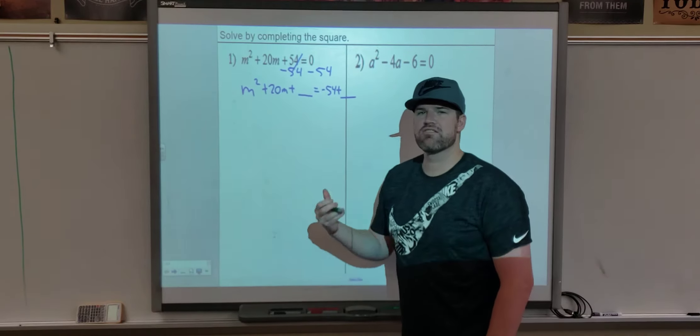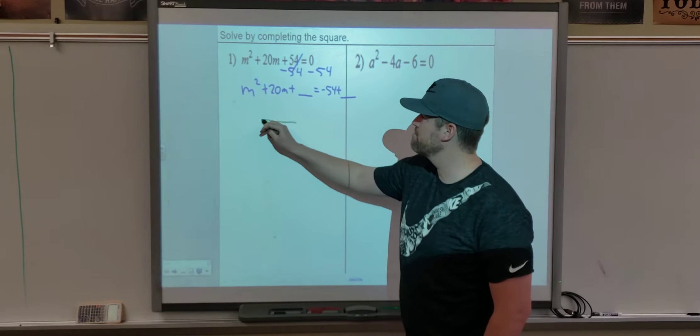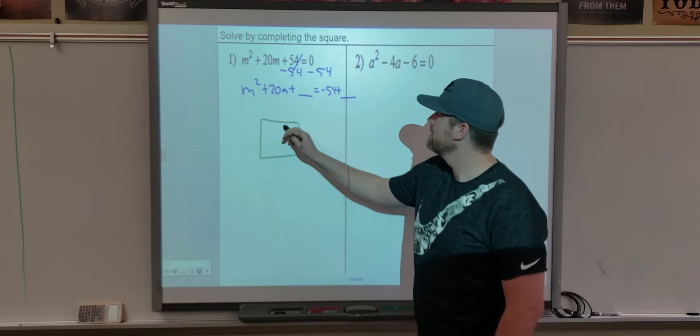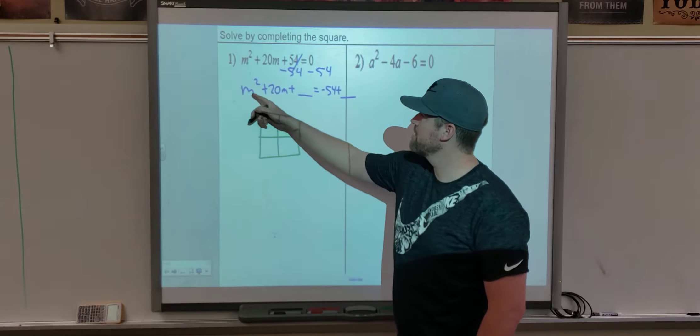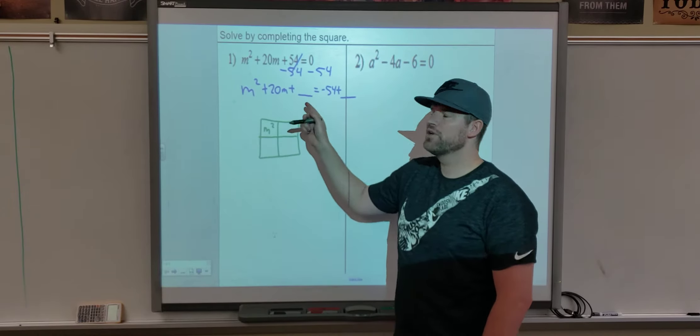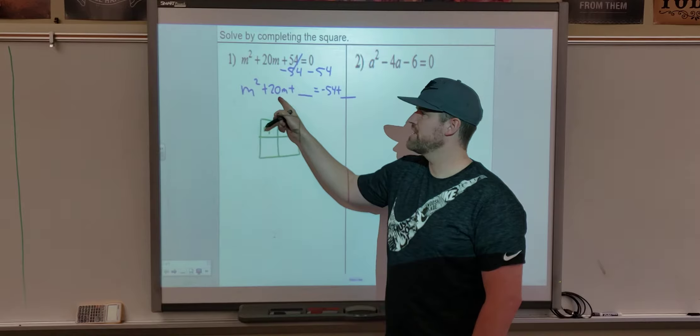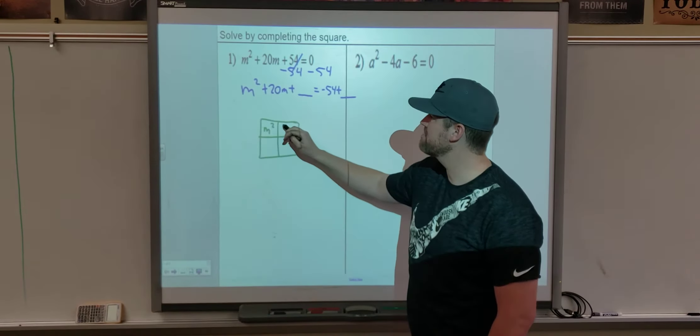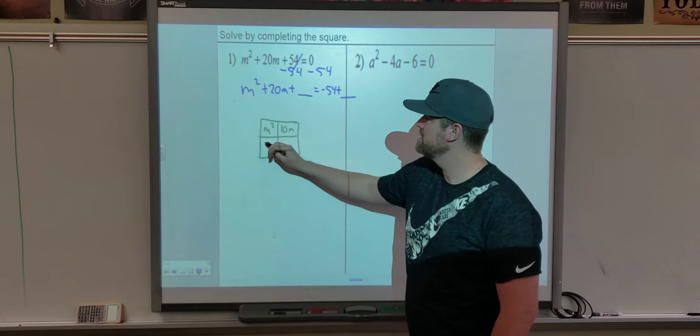At this point, we're going to make our square. It's still a box, but this one we can call a square because it's going to be a perfect square. We're going to put our first term in our first box. We don't know our last term, but we do know to make the perfect square, we're going to take our middle term and split it in half. So 10m, 10m.